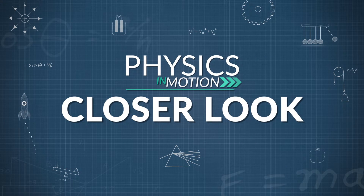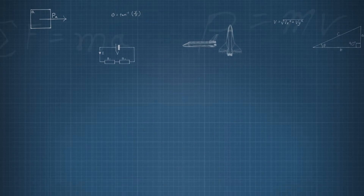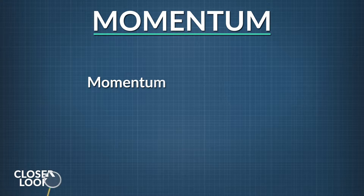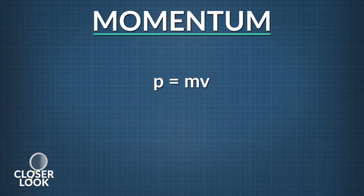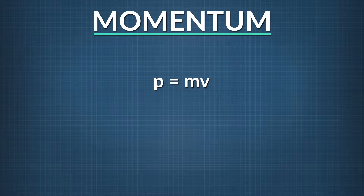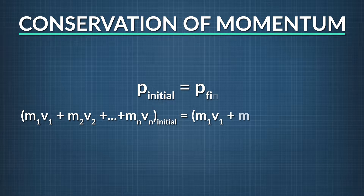In this video, we're going to take a closer look at the conservation of momentum. Recall that momentum is a property of a body that is in motion — it's equal to the mass of the body times its velocity. When objects interact with each other, the total momentum of the system remains constant, regardless of the nature of the forces acting between the objects. In other words, momentum is conserved. As an equation, the conservation of momentum says that the initial momentum of a system is equal to its final momentum.